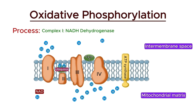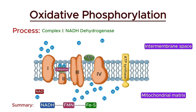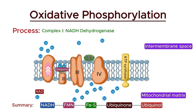To summarize the first stage: electrons transfer from NADH to FMN, then through iron-sulfur clusters, and finally to ubiquinone, reducing it to ubiquinol. This process results in the pumping of four protons from the matrix to the intermembrane space, contributing to the proton gradient.